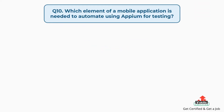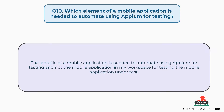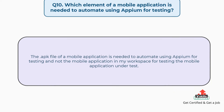Question number 10: Which element of a mobile application is needed to automate using Appium for testing? The .apk file of a mobile application is needed to automate using Appium for testing, and not the mobile application in the workspace for testing the mobile application under test.